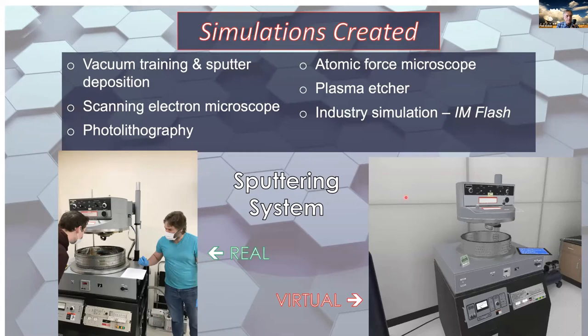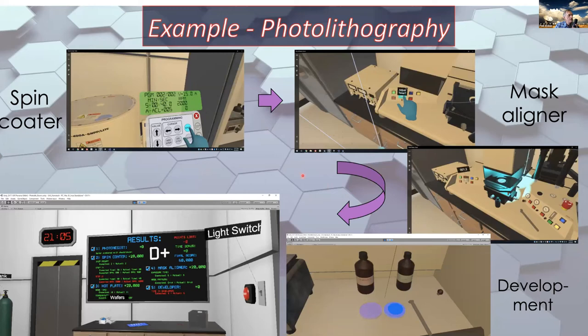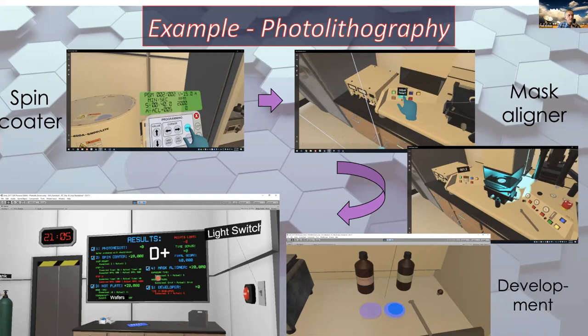Here is an example of another simulation — photolithography — showing what students see in the goggles. The pop-up menu for the spin coater shows the student adjusting the programming. We have a mask aligner with controls, and you can see it being exposed and developed. Here's the final review panel showing the grade the student received — you can see they missed a little on the developer and made a programming mistake in this example. In the high-tech presentation, I'll actually run an abridged version so you can see the student going through it.